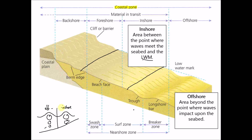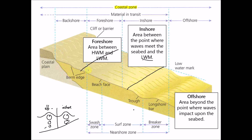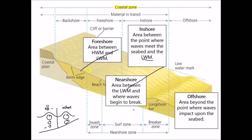The foreshore is the zone between the high water mark and the low water mark — the section covered and uncovered as the tide rises and falls. This is probably the most active part of the beach because it is washed over twice a day and is therefore a very dynamic stretch of coastline. The foreshore and inshore together are collectively called the near shore — from where waves begin to break all the way through to the low water mark.